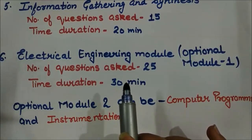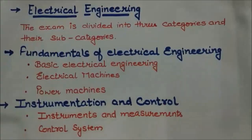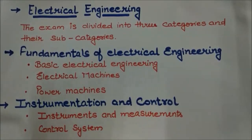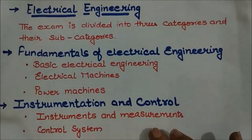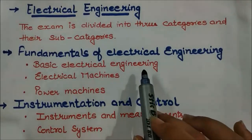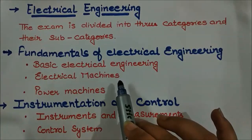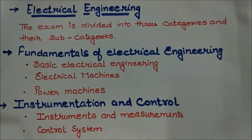For electrical engineering, the exam is divided into three categories with subcategories. The first category is Fundamentals of Electrical Engineering. In this category you will be asked questions from basic electrical engineering, electrical machines or power machines, and topics like Kirchhoff's laws, node and mesh loop analysis, and electrical loop circuits.